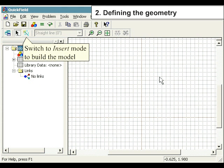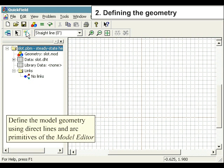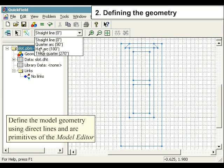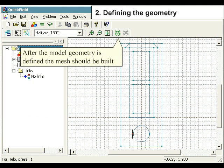Switch to insert mode to build the model. Define the model geometry using direct lines and arc primitives of the model editor. After the model geometry is defined, the mesh should be built.